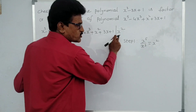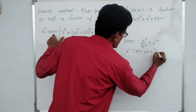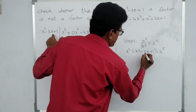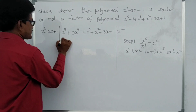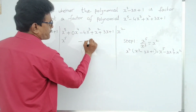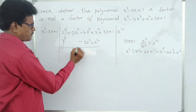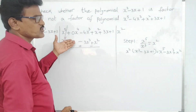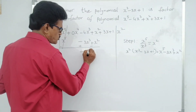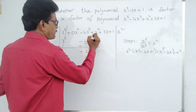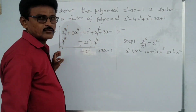Step one: first term by first term. x⁵ divided by x³ — x^(5-3) — gives x². Write x² here. Now x² into (x³ minus 3x plus 1): x² times x³ is x⁵, minus 3x times x² is minus 3x³, plus 1 times x² is x². Write x⁵ minus 3x³ plus x². Do subtraction — change symbols — first term cancels; minus 4x³ plus 3x³ gives minus x³; plus x² minus x² cancels. Bring down plus 3x plus 1.